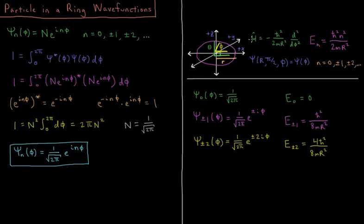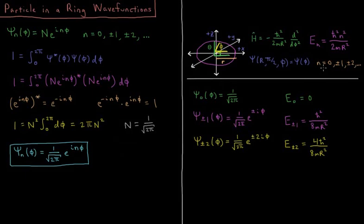The Hamiltonian for this system equals just the kinetic energy inside the ring: minus h-bar squared over 2 times the mass of the particle times the radius of the ring squared, times the second derivative with respect to the angle phi. The energies of this system are h-bar squared times n squared over 2mr squared, where n is a quantum number that can be any integer: 0, plus or minus 1, plus or minus 2, etc.